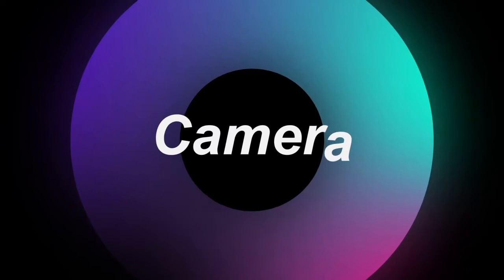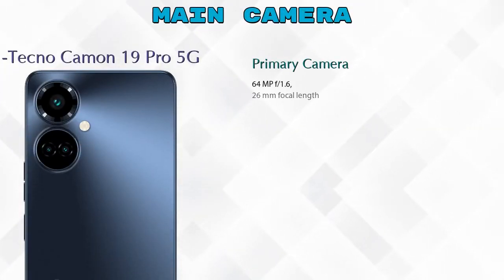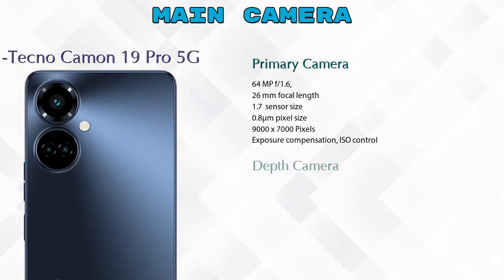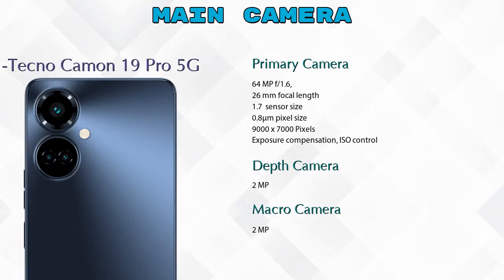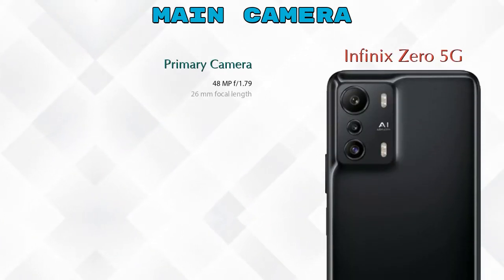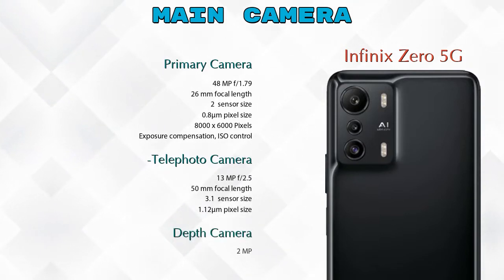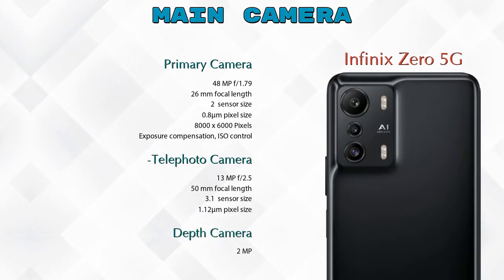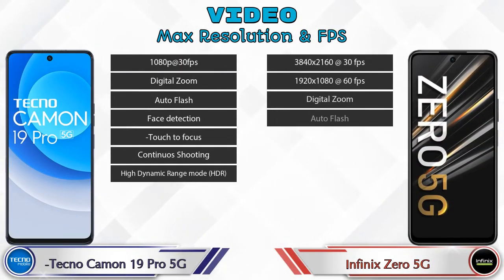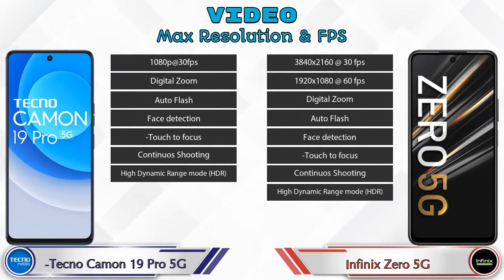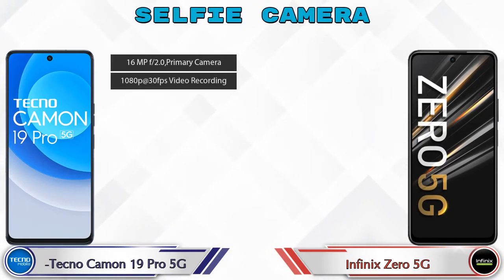Now let's look at the camera. The Camon 19 Pro 5G has three rear cameras: a primary camera, a depth camera, and a macro camera. The Zero 5G also has three rear cameras: a primary camera, a telephoto camera, and a depth camera. For video, the Camon 19 Pro 5G has 7 features and the Zero 5G has 8 different types of features.